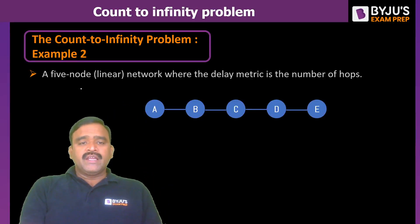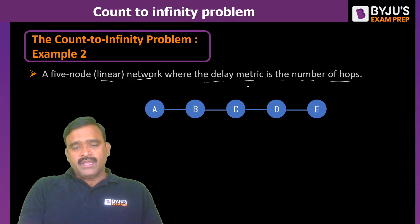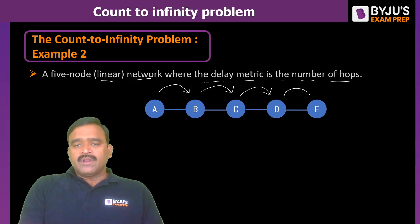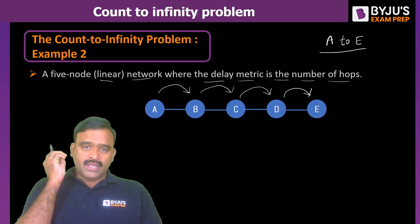Let us suppose we are taking a 5 node linear network where the delay metric is the number of hops. We are having 5 nodes A, B, C, D and E. The delay metric is number of hops means A and B are adjacent. Within 1 hop I can reach from A to B and within 1 hop I can reach from B to C, C to D 1 hop and D to E 1 hop. That means if you wanted to go from A to E, how many hops are required? 1, 2, 3, 4. That means node A can reach to E within 4 hops. Hop is nothing but it is a jump from 1 node to the neighboring node.